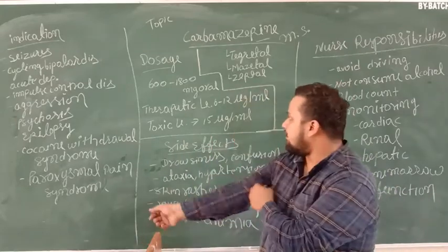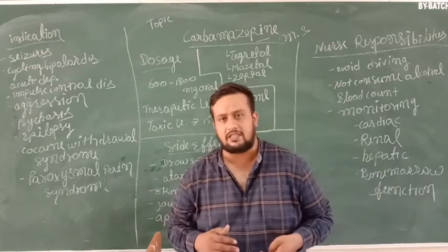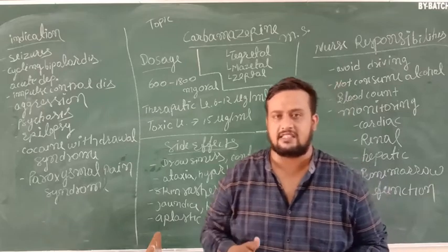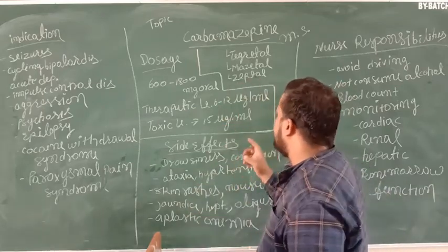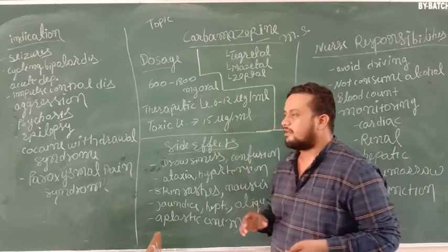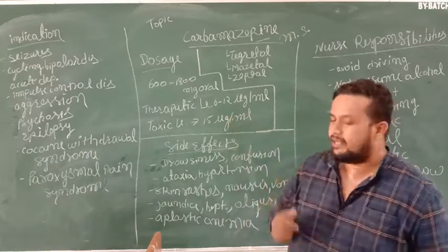The next question is the therapeutic level. Therapeutic level is the level that can cure and treat. So this therapeutic level is 6 to 12 mcg per ml.